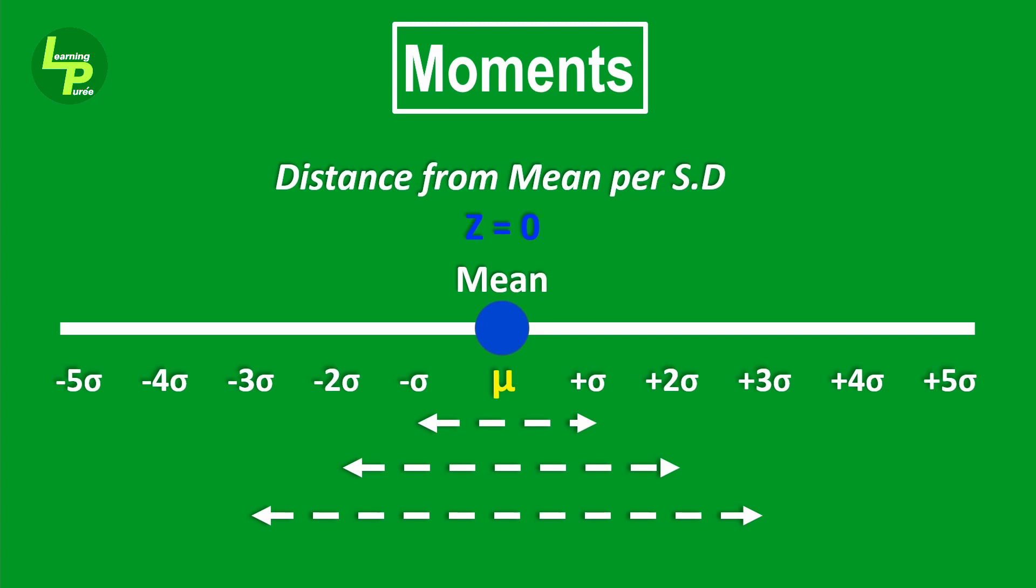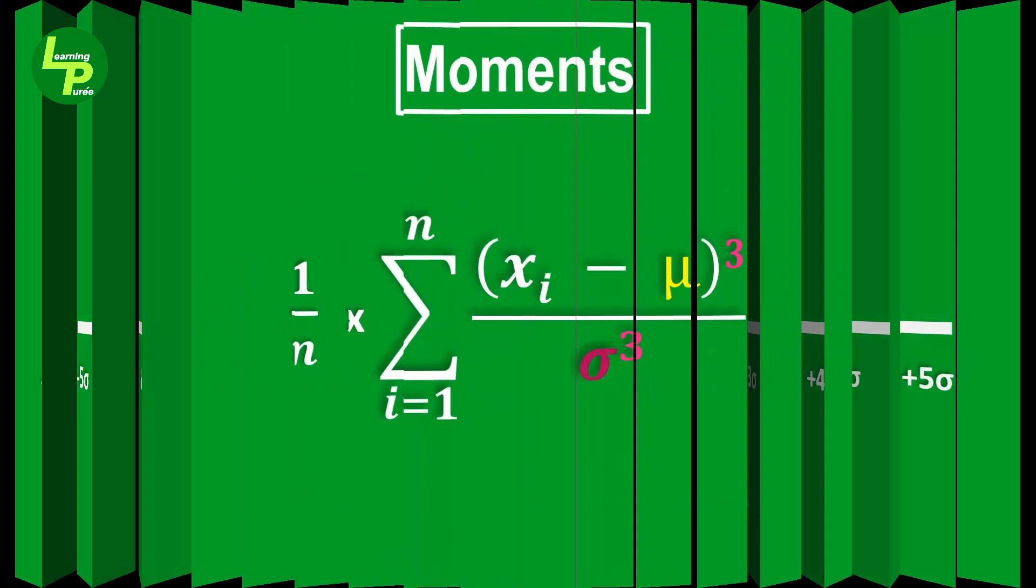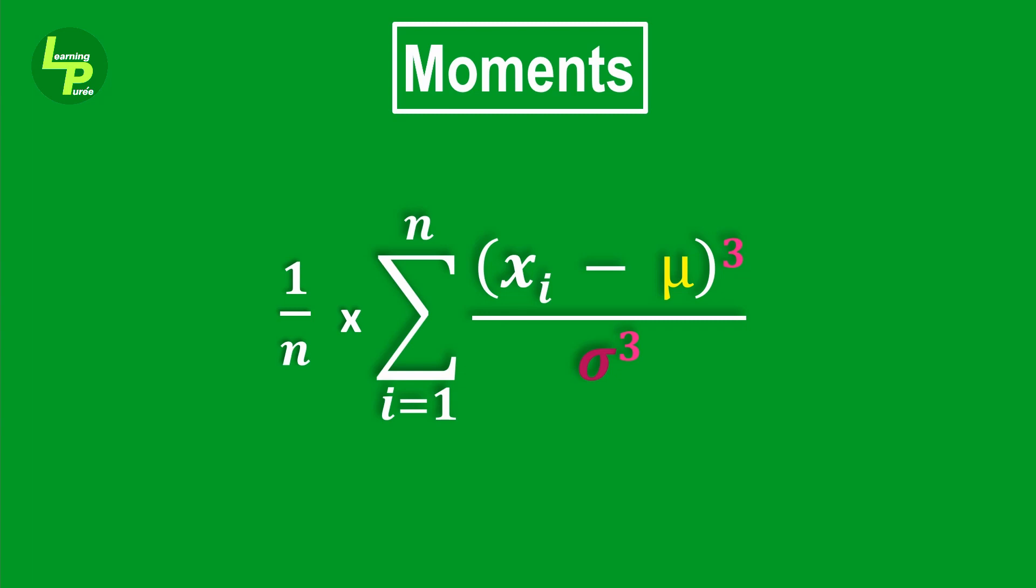If we use this concept in recomputing the third order, what we get is this new equation. Now, if you have noticed by using this equation, we are trying to remove the effect of the second order moment, that is variance in this equation.